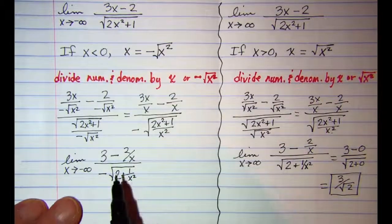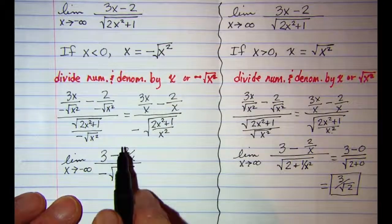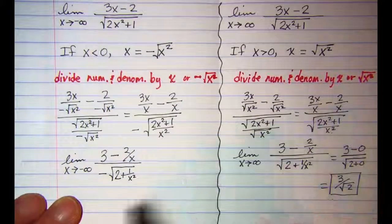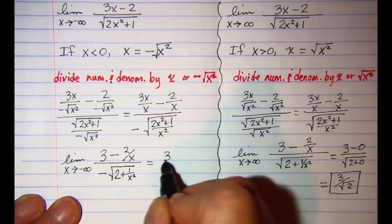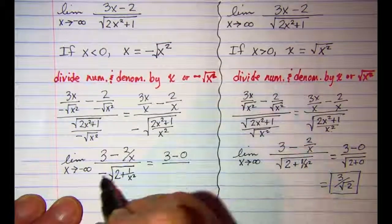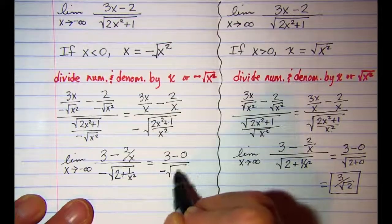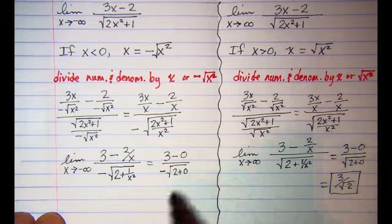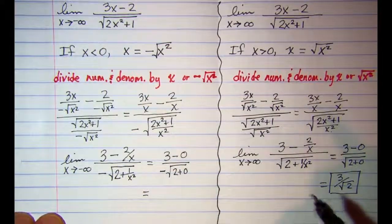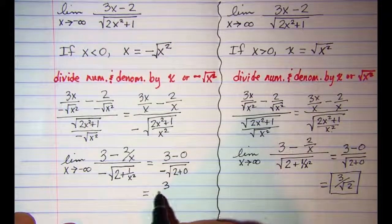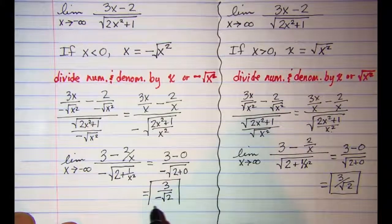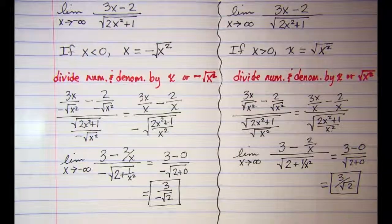As x approaches negative infinity, the fraction 2/x approaches 0 and 1/x² approaches 0. So we have 3 minus 0 over the negative square root of 2 plus 0. Therefore, our limit as x approaches negative infinity is 3 over negative √2, which equals −3/√2.